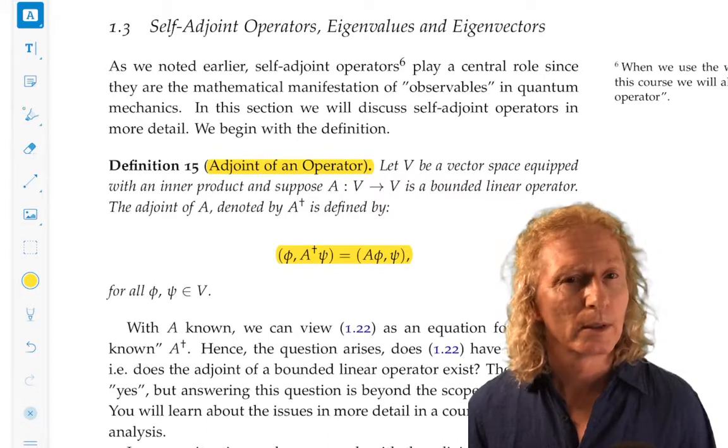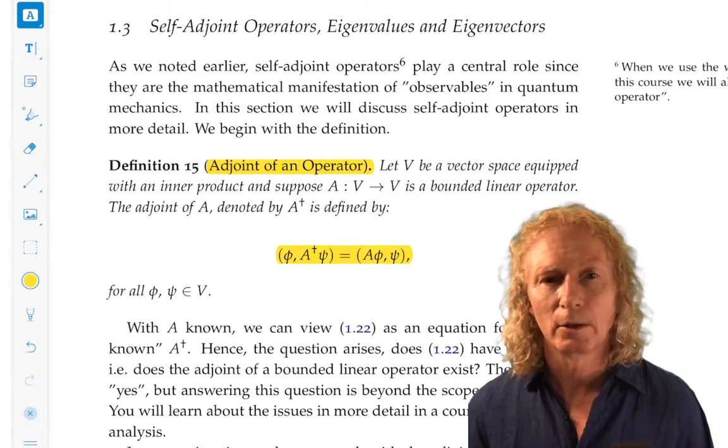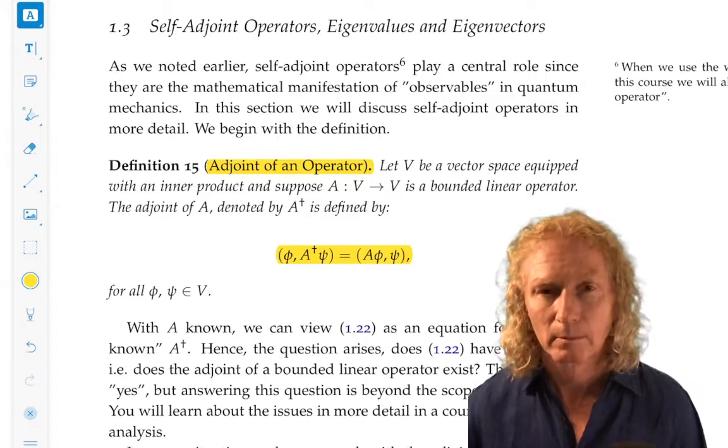And that must hold for every vector phi and psi in the vector space. So everything is known in this problem except for A dagger, and this defines A dagger, the adjoint.